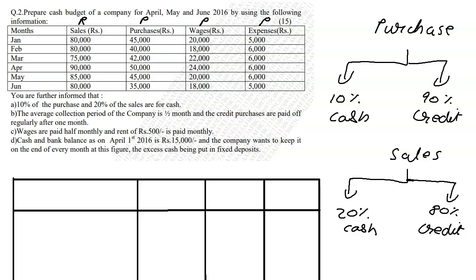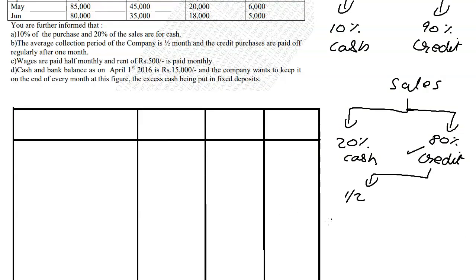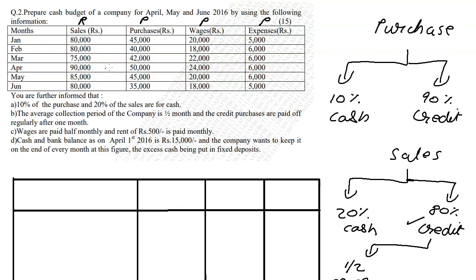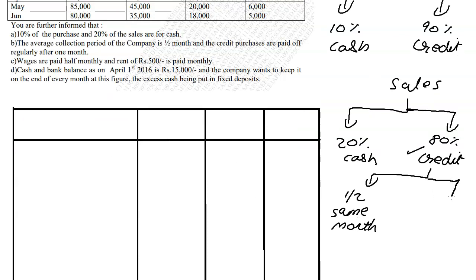The average collection period of the company is half a month. That means out of all the credit sales, half will be collected in the same month and half in the next month. For example, if you're selling 90,000 in April, 20% is cash sales. Of the 80% credit sales, sales in the first half of April are received in April, and sales in the second half are received in May — that's 40% same month and 40% next month.